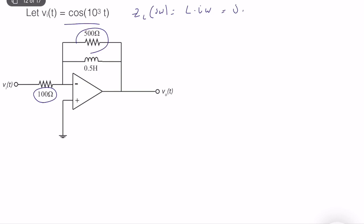So the inductor impedance is j times L, which is 0.5, times the frequency, which is 10 to the power 3, so it's equal to 500j. We write 500j instead of the inductor. Now we treat this impedance as if it's a resistor circuit and analyze it using classical techniques.